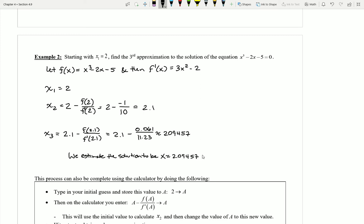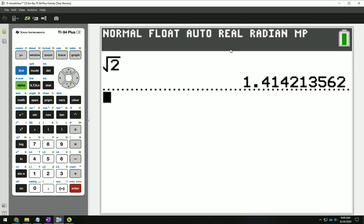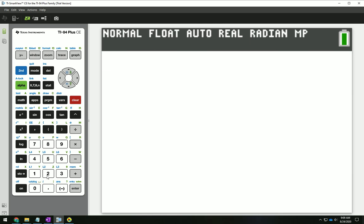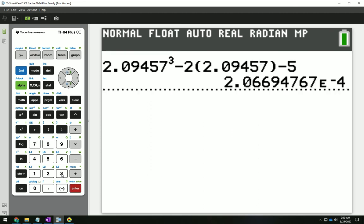Now the cool part is that you could actually check this by using a calculator. If I went back to a calculator here I could see that if I took that value 2.09457 and raised it to the third power, did 2 times that value, and then subtracted 5, I could see that I don't actually get zero.